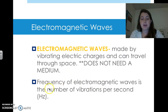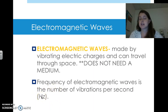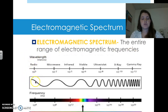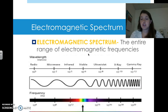The frequency of electromagnetic waves is the number of vibrations per second, measured in hertz — very similar to the frequency we discussed when talking about the characteristics of waves. The electromagnetic spectrum is basically the entire range of electromagnetic frequencies, going from really low frequency waves all the way to very high frequency waves. Within the electromagnetic spectrum is the light that humans can see, which is why it's called visible.